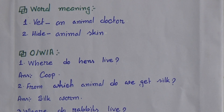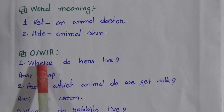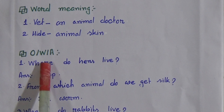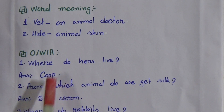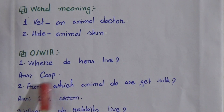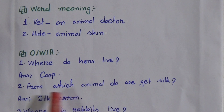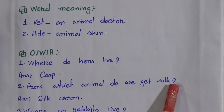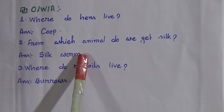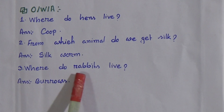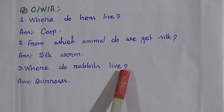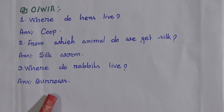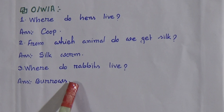Now we go to One Word Answer. In this section there is a question and you have to give the answer in only one word. Number 1 — Where do hens sleep? The answer is coop. Number 2 — From which animal do we get silk? Silkworm. Number 3 — Where do rabbits sleep? Burrows — B-U-R-R-O-W-S.